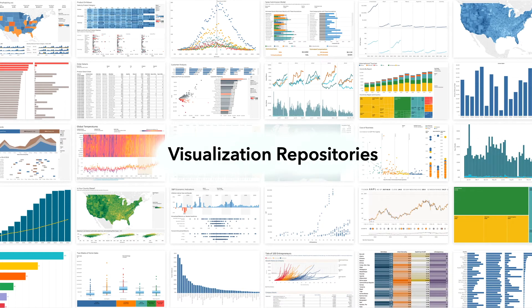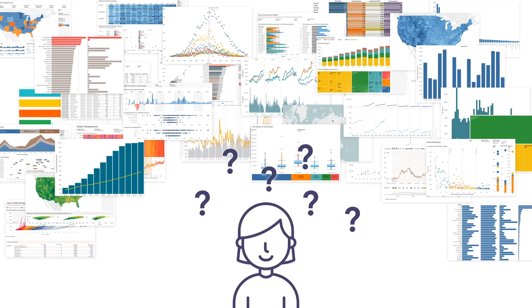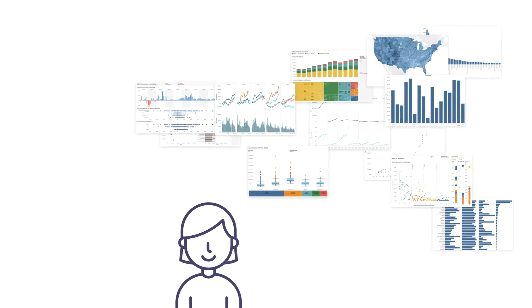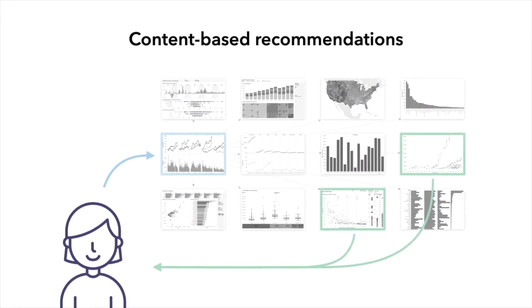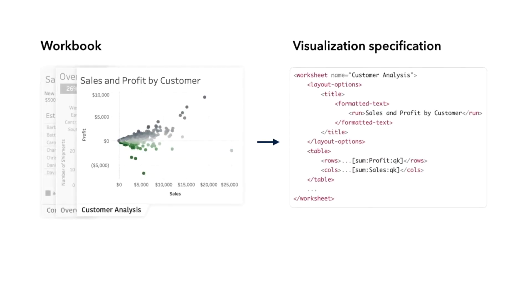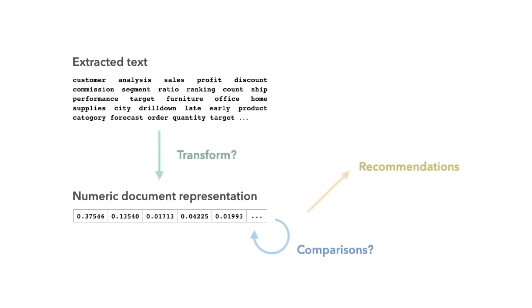Users accumulate masses of visualizations, but it's difficult to find relevant content. We propose a content-based recommender system that uses extracted text from visualization workbooks. But how do we transform a bag of words into a vector and make comparisons, to create meaningful recommendations?